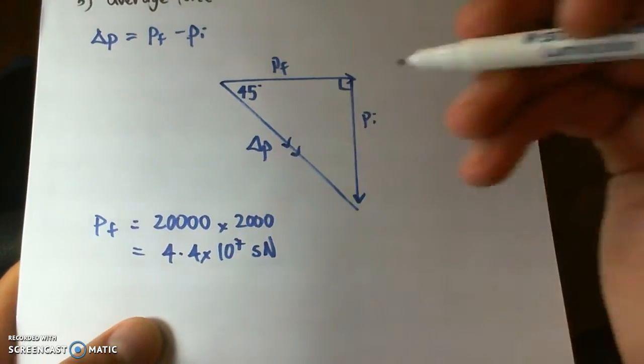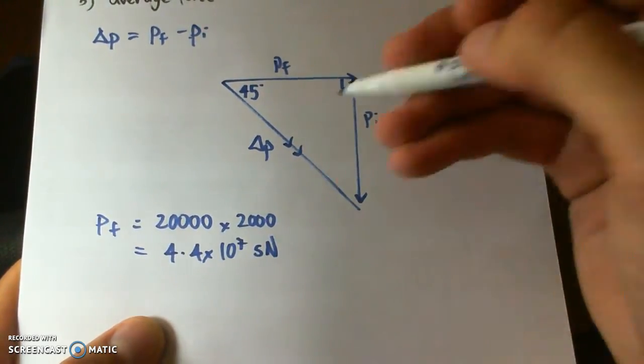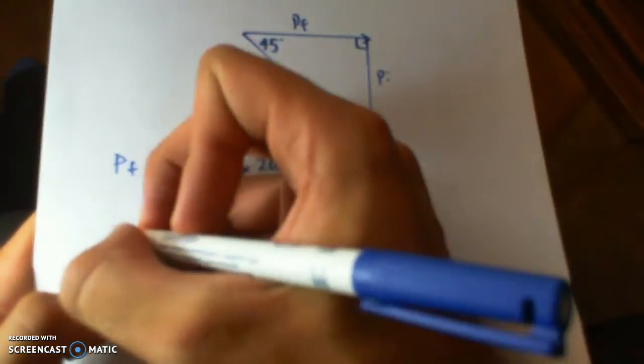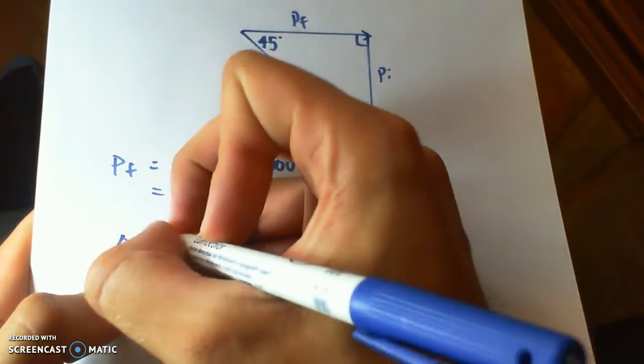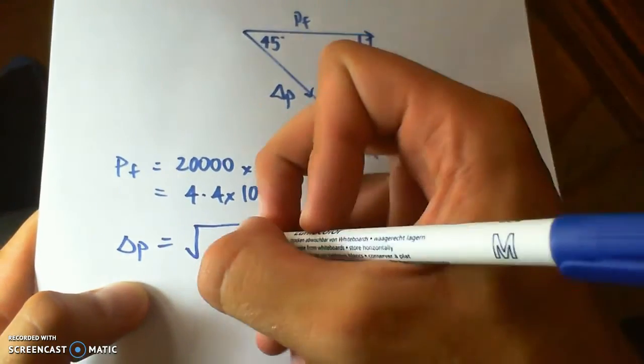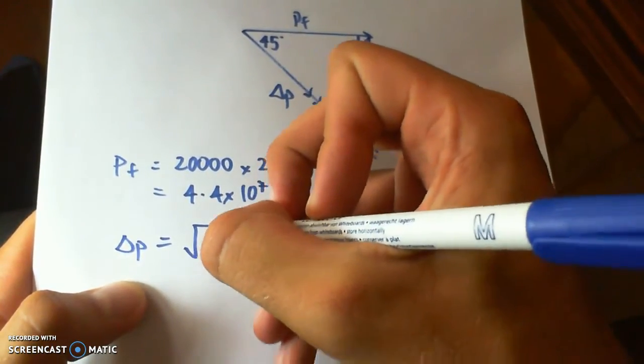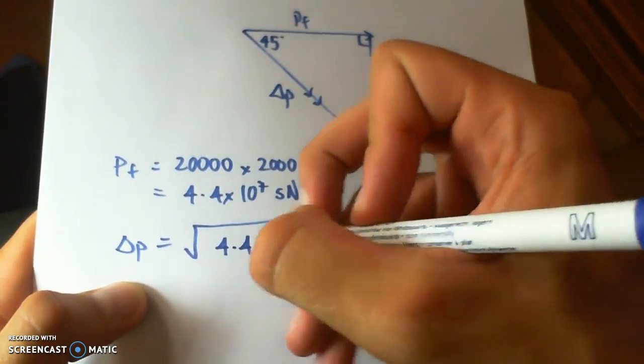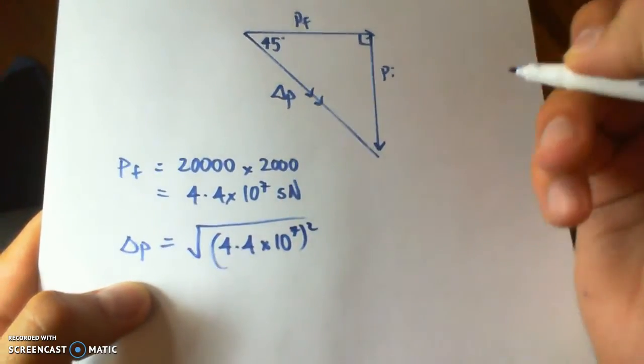And we can use Pythagoras and we can calculate the change in momentum. So the change is the square root of 4.4 times 10 to the 7 squared using Pythagoras.